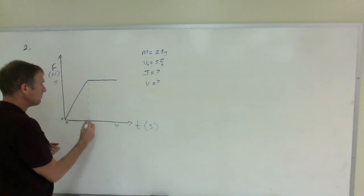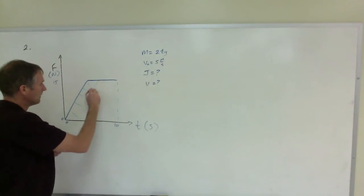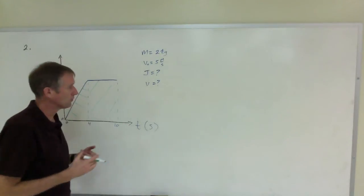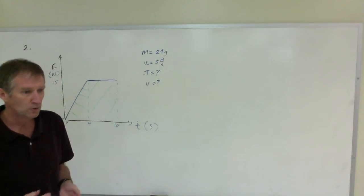To figure out the impulse, that's the area under the graph. So we need to figure out the area of that triangle and add it to the area of this rectangle. That's going to give us the impulse. Impulse is the area under a force-time graph no matter what it looks like.